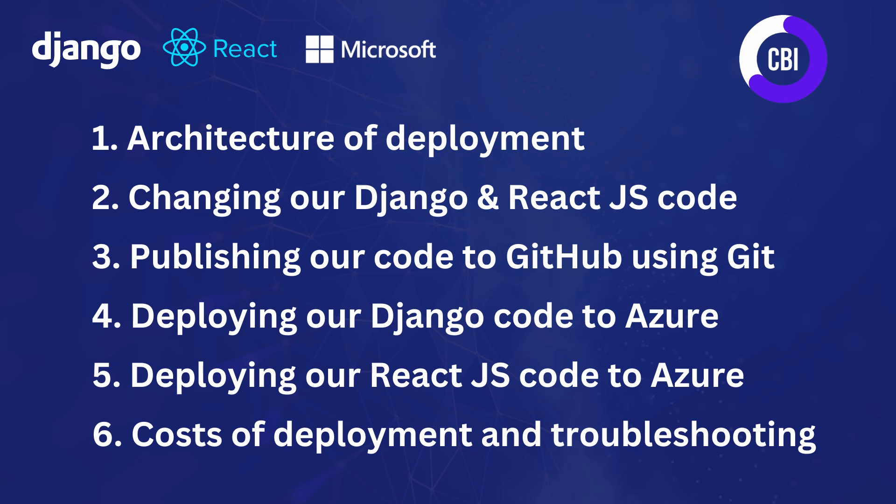In this first video we're going to focus on the architecture of this deployment. In the next videos we're going to be focusing on changing our Django and React code, and we're going to push that code to GitHub using Git. Then we have a separate video for deploying our Django code to Azure and also for deploying our React.js code to Azure, and in the last video I'm also going to go over the costs of the deployment.